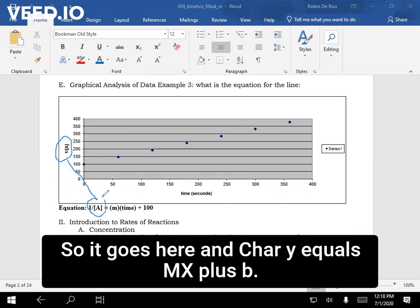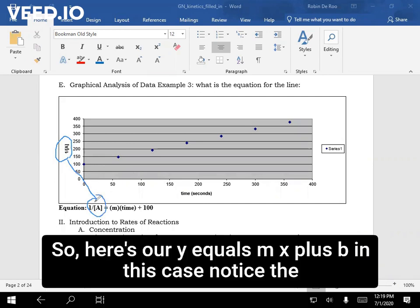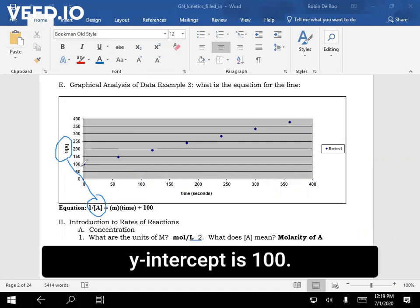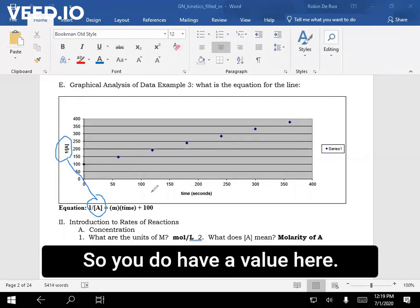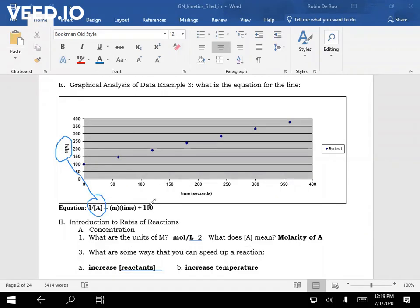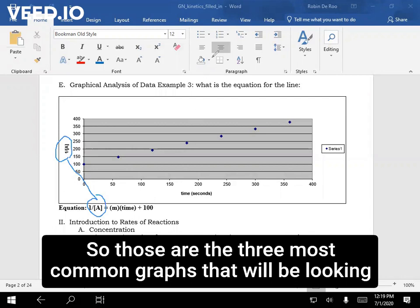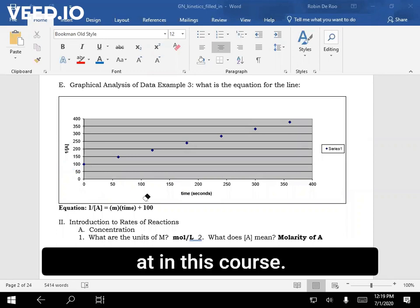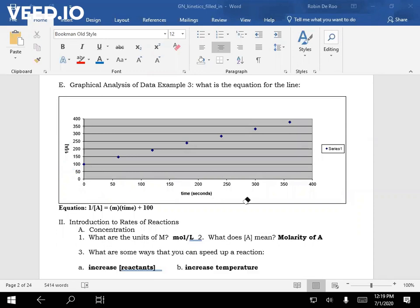So it goes here into our y equals mx plus b. So here's our y equals mx plus b. In this case, notice the y-intercept is 100, so you do have a value here. So those are the three most common graphs that we'll be looking at in this course.